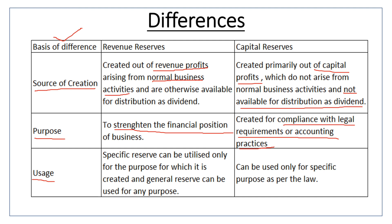Usage: Revenue reserve is of two types — general reserve and specific reserve. General reserve is not created for a specific purpose and can be used to distribute dividend. Specific reserve is created for a specific benefit, for example debenture redemption reserve, which is used when debentures are due for redemption.